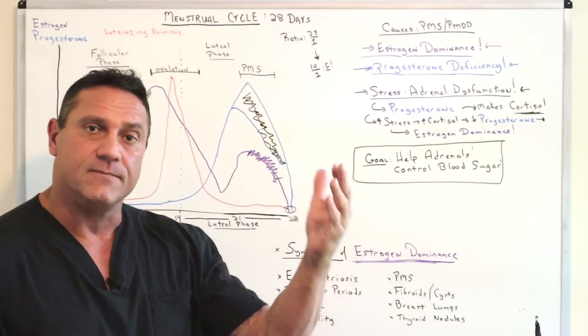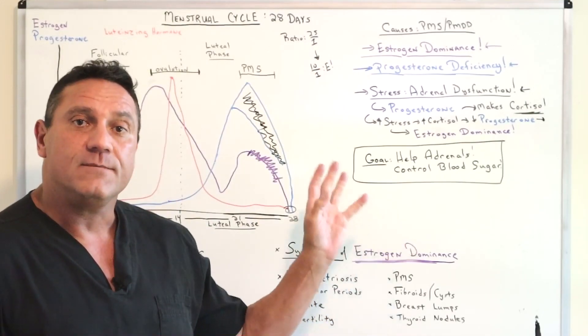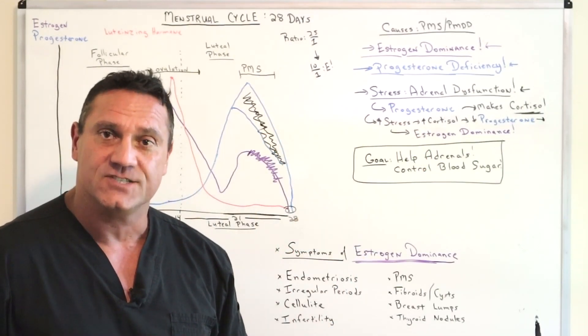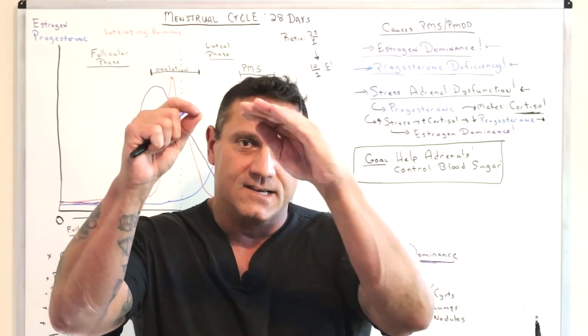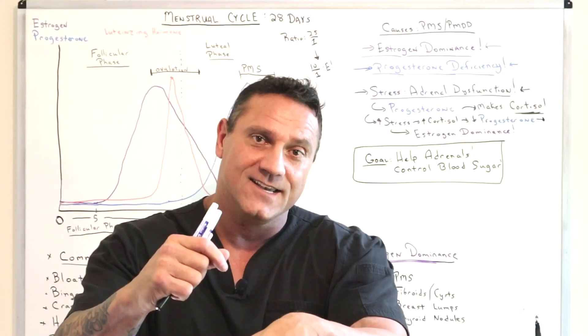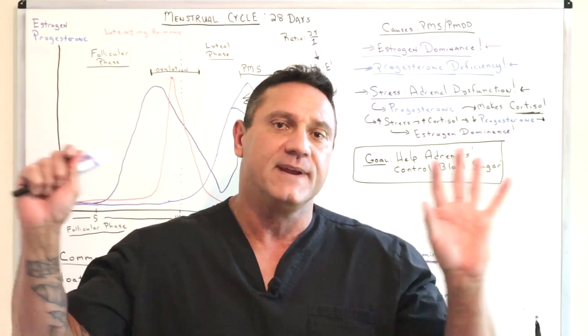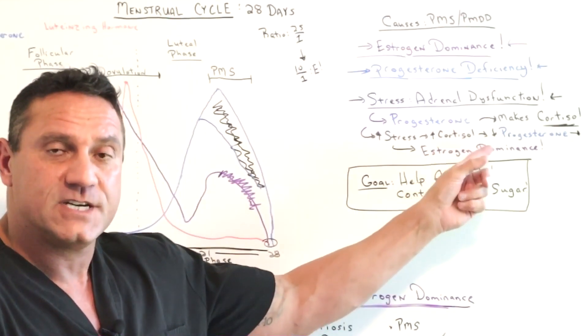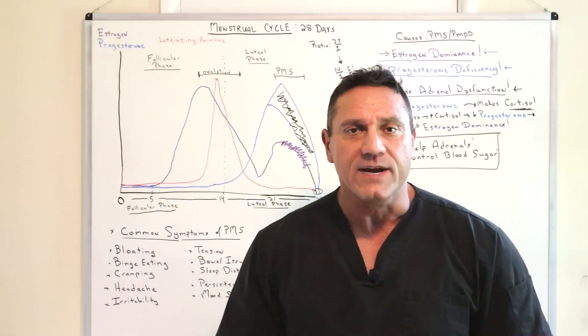But let's go back upstream. What makes estrogen? Your ovaries. What makes progesterone and cortisol? Your adrenal glands, your stress glands. Cholesterol, pregnenolone comes over, comes down, progesterone to make cortisol. And this is all in the adrenal glands. Progesterone and estrogen are made in two different places, not the same. So the more stressed out you are, you decrease your progesterone. And I always say estrogen is like the gas pedal. Progesterone is like the brake.